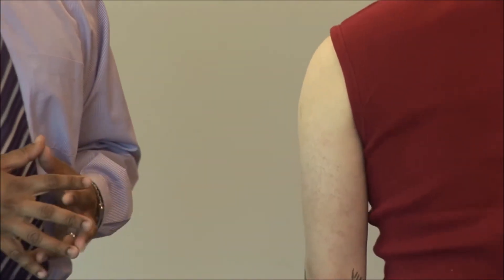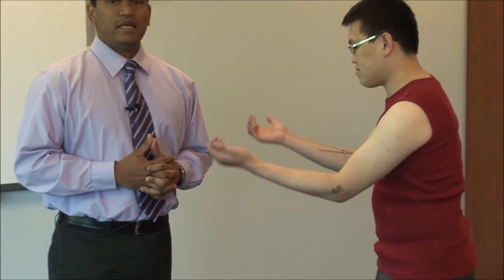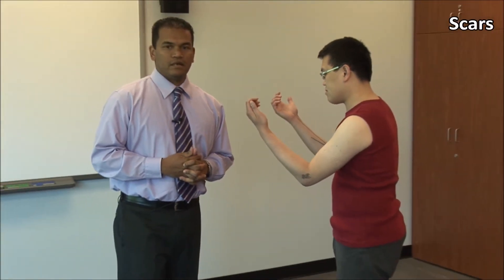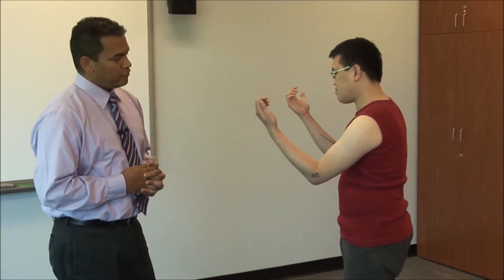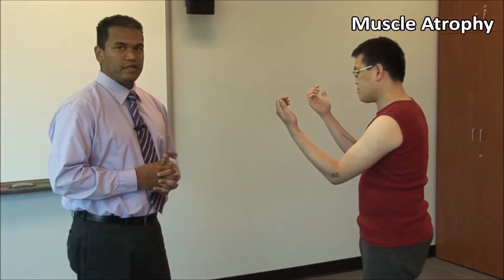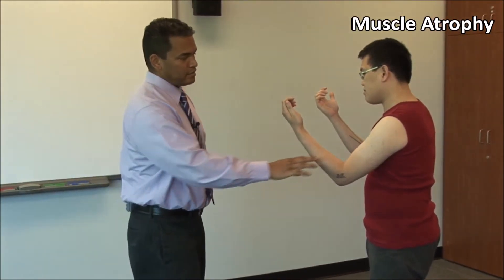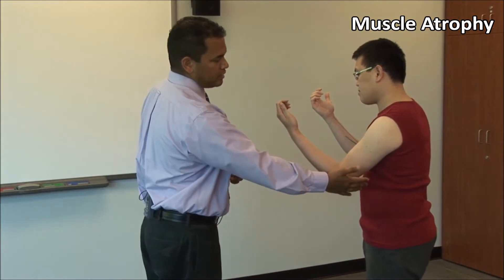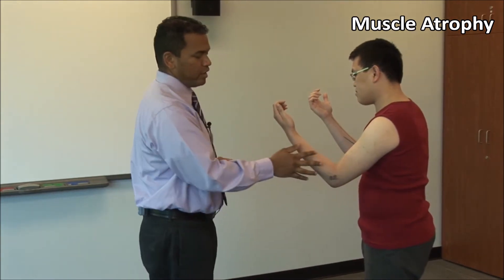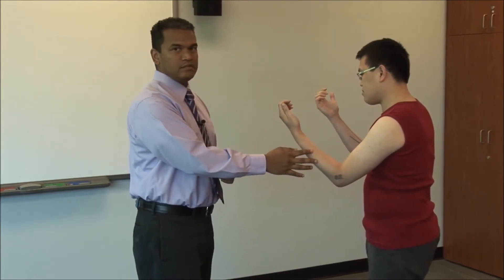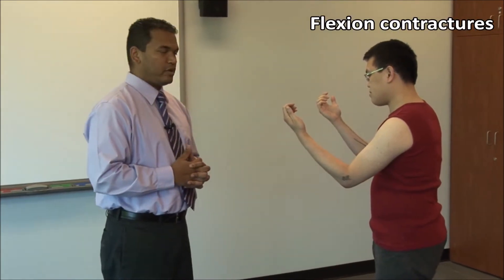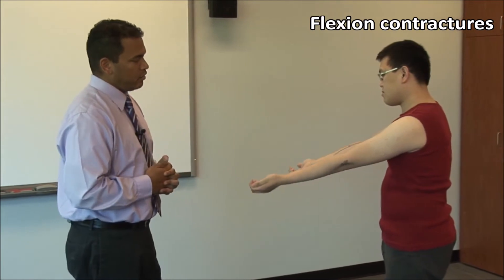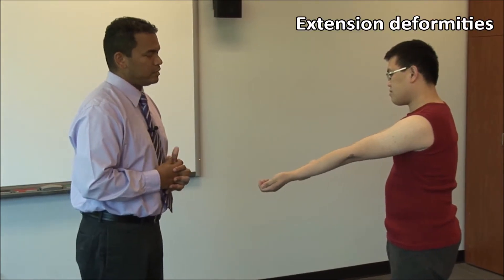Also look for rheumatoid nodules and psoriasis on the extensor surface of the elbow. Remember to look at all sides and take note of any scars. Also look for muscle atrophy such as at the biceps, triceps, and forearm muscles, and look for flexion contractures or extension deformities with the elbows fully extended.